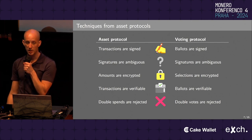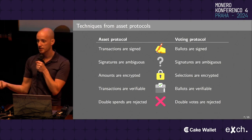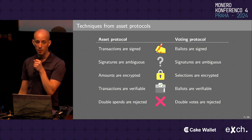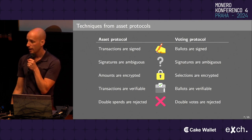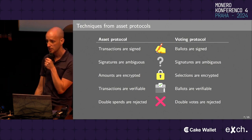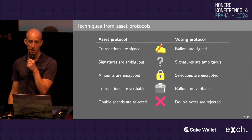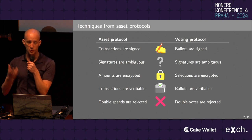In a digital asset protocol, what is signed is a transaction that shows it is authorized. Similarly, ballots in a voting protocol will be signed to show they are authorized by the voter. In privacy-respecting digital asset protocols, signatures are often ambiguous — you can't necessarily identify the signer, but you know the signature is valid. We'll have the same in a digital voting protocol, where signatures are ambiguous in order to provide voter privacy.